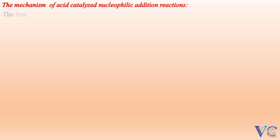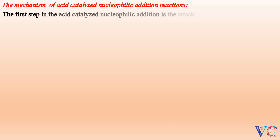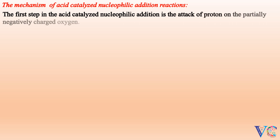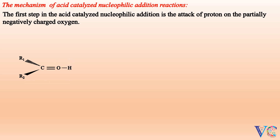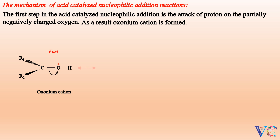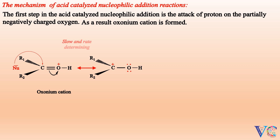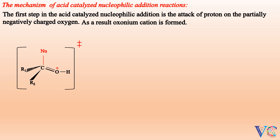The mechanism of acid-catalyzed nucleophilic addition reactions: The first step in the acid-catalyzed nucleophilic addition is the attack of a proton on the partially negatively charged oxygen. As a result, an oxonium cation is formed — this is a faster step. The oxonium cation is stabilized by resonance. The nucleophile can easily attack the carbon of the oxonium ion, which is the slow and rate-determining step. As a result, a transition state is formed, and product formation takes place from the transition state.